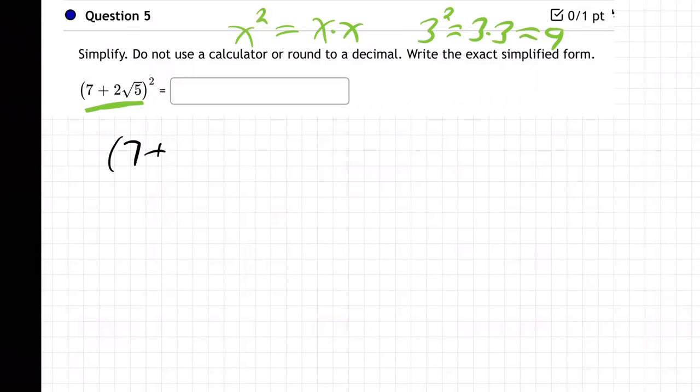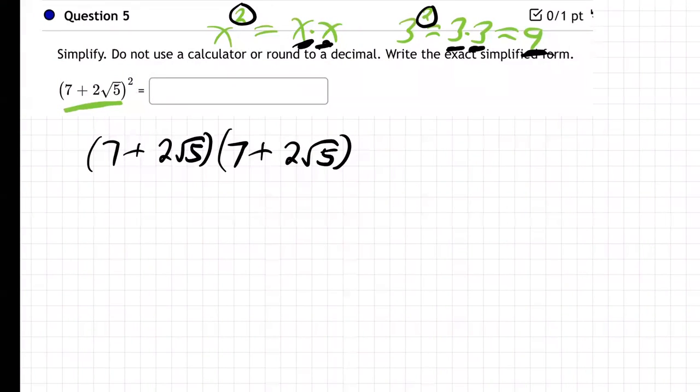So I'm going to go, okay, so 7 plus 2 root 5, and then another 7 plus 2 root 5. That's what a little 2 in the upper right-hand corner always means. It means two of those multiplied together. We know that. Okay, so let's do it.